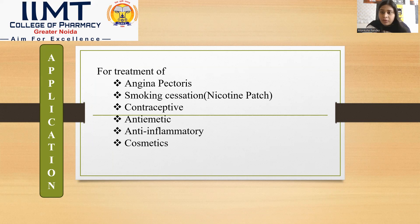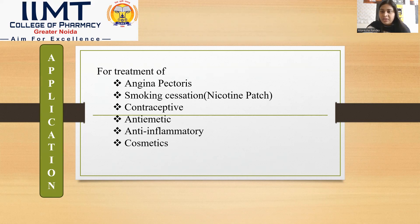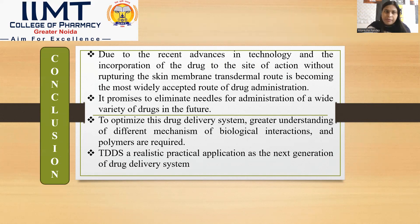Where are we using these delivery systems exactly? For angina pectoris, for smoking — for persons addicted to smoking we use nicotine patches — contraceptives, anti-emetics, anti-inflammatory applications, and in cosmetics or dermatology.